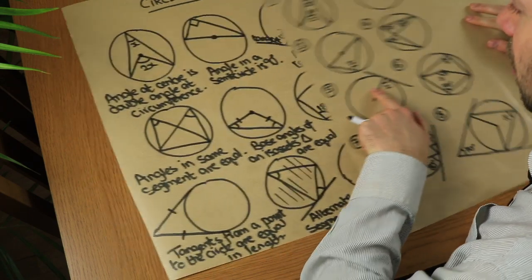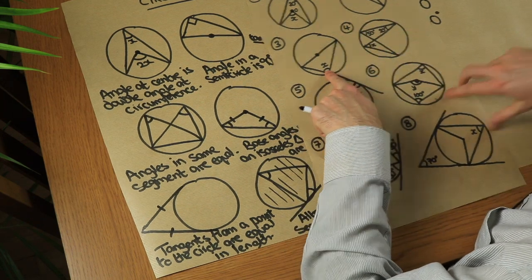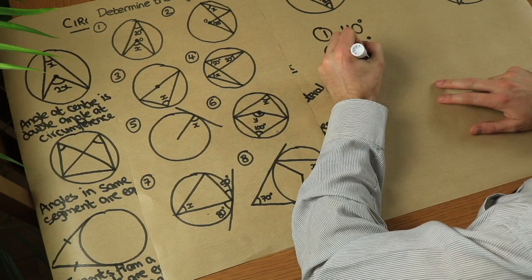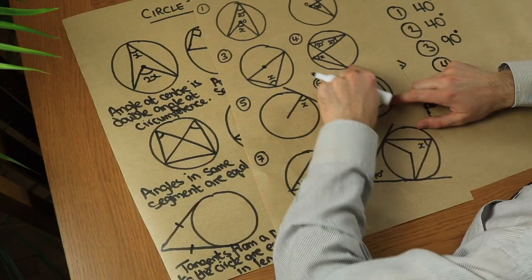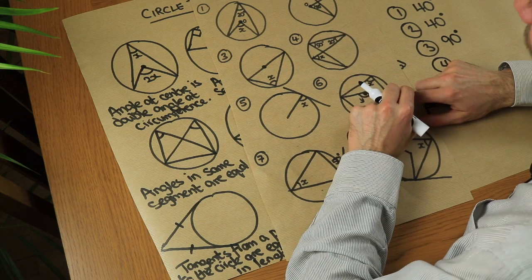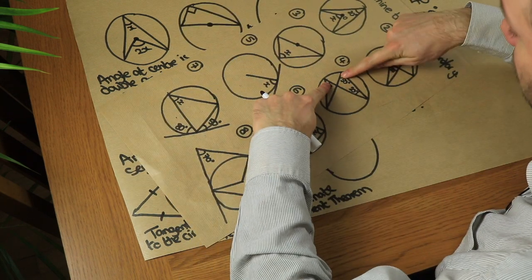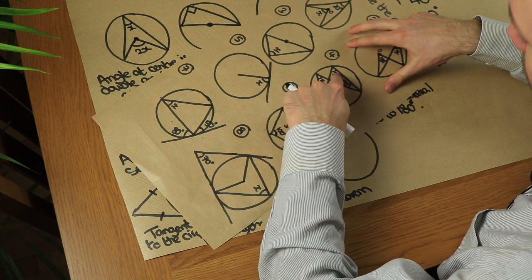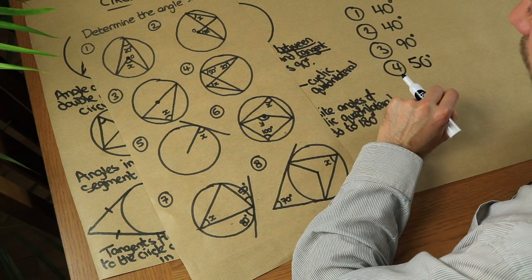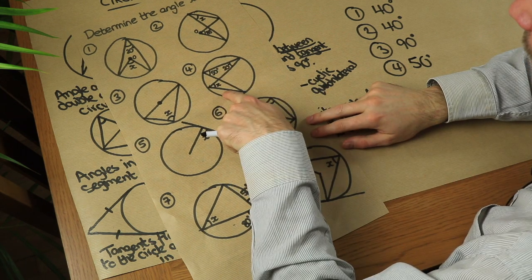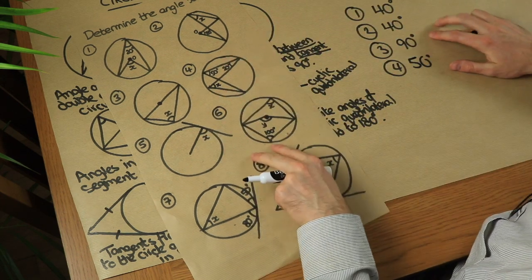For the third example, this is the diameter because it goes through the centre. The matching circle theorem is angle in a semicircle — this is a semicircle — so that angle must be 90 degrees, so x equals 90 degrees. For the fourth example, we have a butterfly or bow-tie shape: angles in the same segment are equal. The angles at the same end of the bow-tie match, so x equals 50 degrees — not 20 degrees. Don't confuse this with alternate angles, which requires parallel lines.